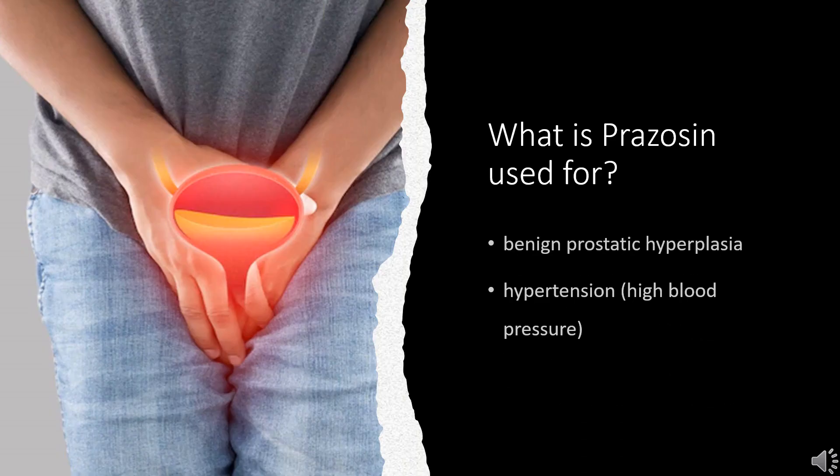What is prazosin used for? This drug is indicated for the treatment of hypertension, or high blood pressure. Prazosin can be given alone or with other blood pressure-lowering drugs, including diuretics or beta-adrenergic blocking agents. Prazosin does not negatively impact lung function and therefore may be used to manage hypertension in patients who are asthmatic or have chronic obstructive lung disease, COPD.